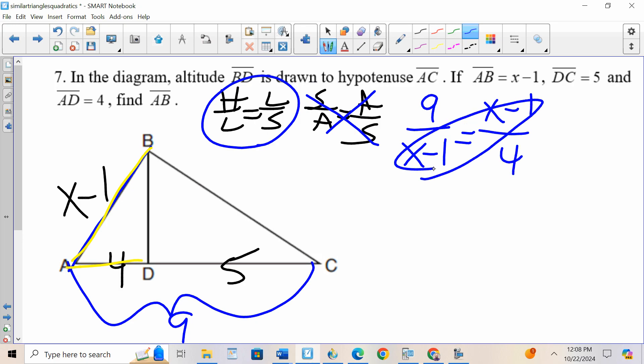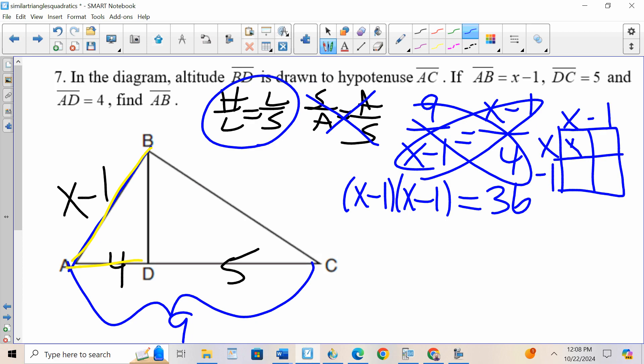Now when I cross multiply and solve, X minus 1 times X minus 1, for now I'm going to write as X minus 1 times X minus 1. 9 times 4 is 36. To do X minus 1 times X minus 1, I do my box method. So I get X squared minus 1X minus 1X plus 1. When I combine like terms, X squared minus 2X plus 1. So I get X squared minus 2X plus 1 equals 36.